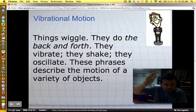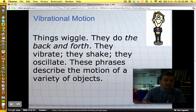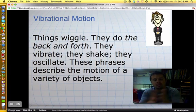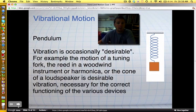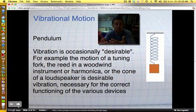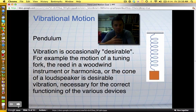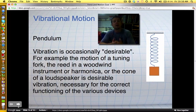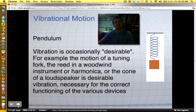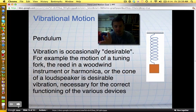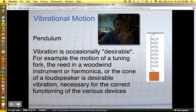They do the whole back and forth thing. They vibrate, they shake, they, as scientists call it, oscillate. These phrases describe the motion of a variety of objects. And you see this bobblehead up here in the corner. This bobblehead is a great example of vibrational motion. Okay, a pendulum is another great example. Vibration is occasionally desirable. You want vibration to happen sometimes. For example, a tuning fork, a reed in an instrument, the speaker, those things are all good vibrations. There are some times that we don't want vibrational motion to occur, and we have to engineer things for that exact thing to happen. For example, Google Galloping Gertie. It's amazing. It's a bridge. It vibrates, it's not supposed to. Bridges are not supposed to move, but check it out. Amazing.